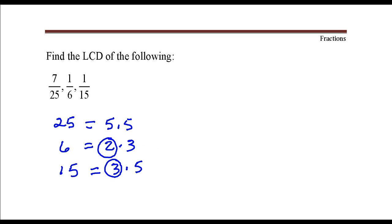The greatest number of times that a 5 occurs in any one of these factorizations is twice, right here.